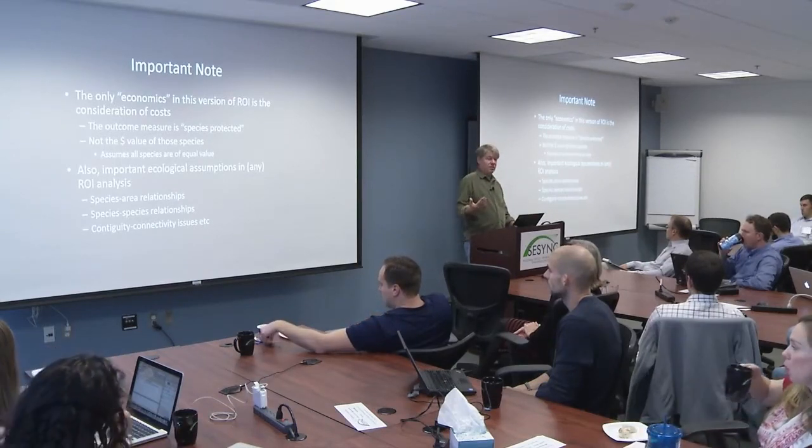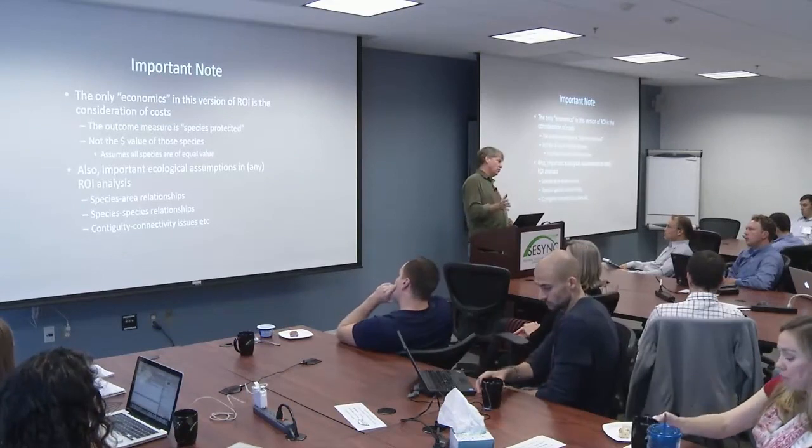Another thing this talk is going to emphasize is how dependent this economic perspective is on what you do in ecology. A lot of this work engages with things like habitat quality, the relationship between area conserved and either the diversity or abundance of species as a function of that area, predation, and how species interact. That's real and matters, and you'd like to build that into the outcome measure. Things like contiguity and connectivity — we want to plan to think about migration and things like that.